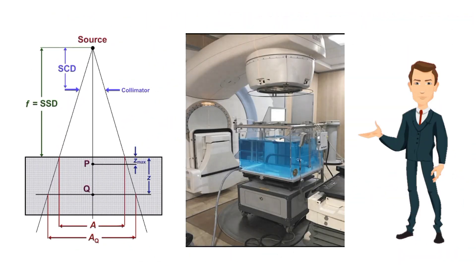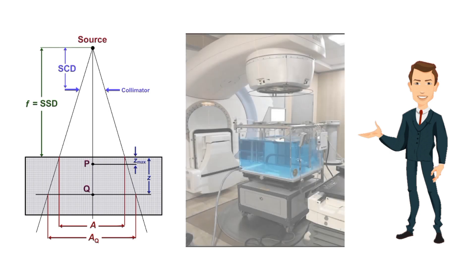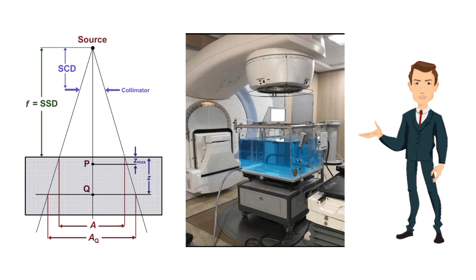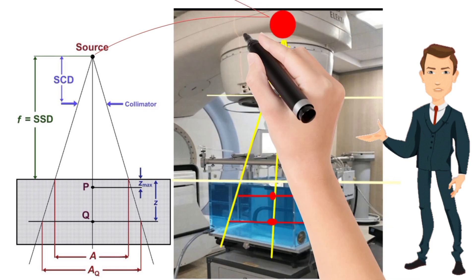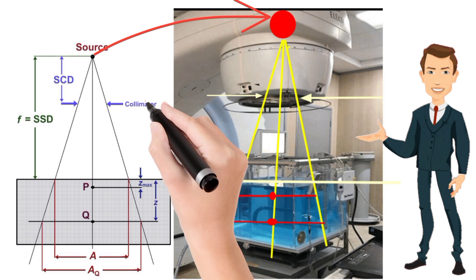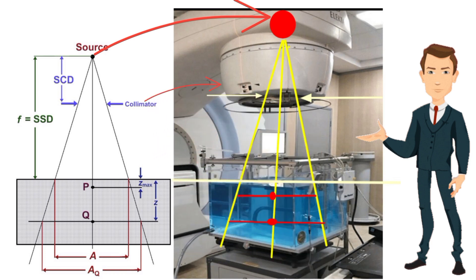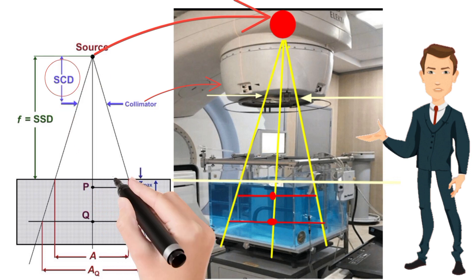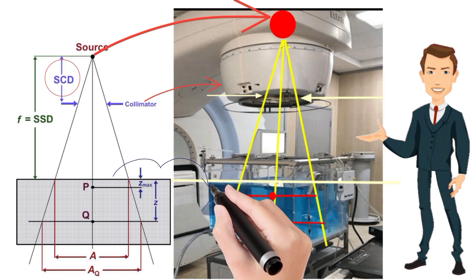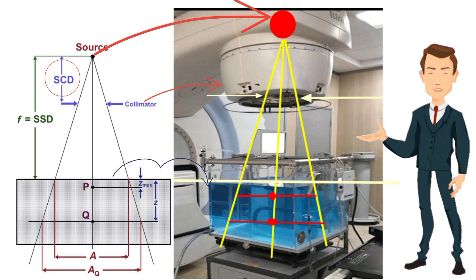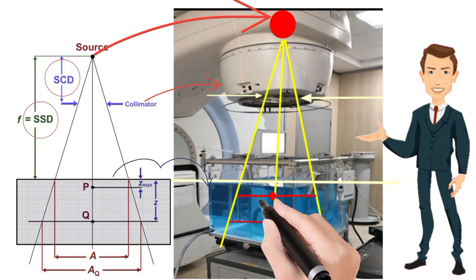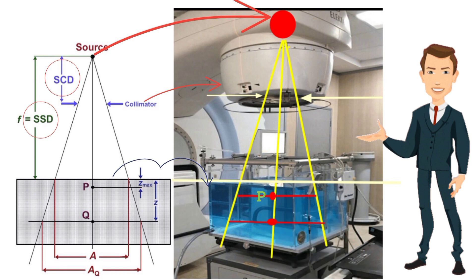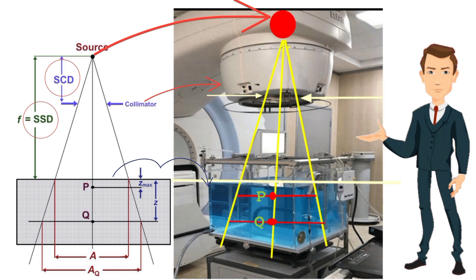We understand this ray diagram comparing it to a setup where a water phantom is placed under the head of a medical linear accelerator. This is the point source emitting photon beam. This is the collimator which helps collimate the beam. The distance between source and collimator is called SCD. The distance between source and the surface of the water phantom is called SSD. This is point P at depth D max, the depth at which maximum dose is deposited. This is point Q at depth Z inside the phantom.